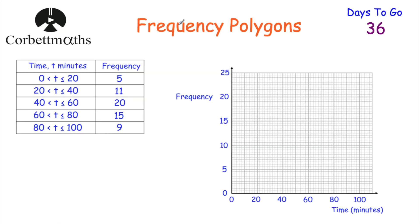Today we're going to be looking at frequency polygons, and then we're going to look at stem and leaf diagrams. So here we've got a table, and we've got time from 0 to 20, 20 to 40, 40 to 60, 60 to 80, and 80 to 100 minutes, and we've got the frequencies for each one of those categories. Here we've got a set of axes, and we're going to draw a frequency polygon. So feel free to press pause now to draw this frequency polygon.